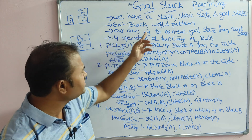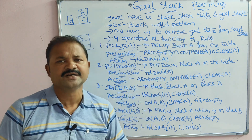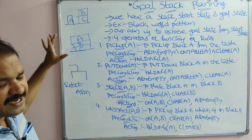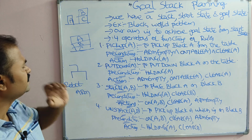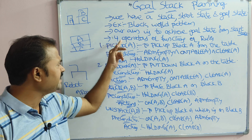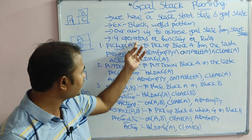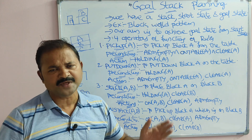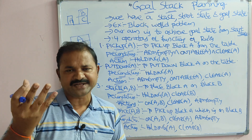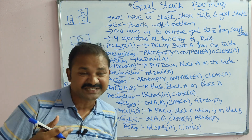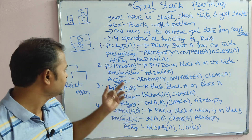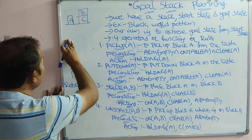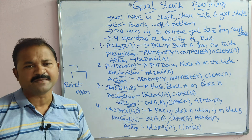Our major aim is to achieve the goal state from the start state. To do that, we mainly use four operators — which can also be called four functions or four rules. These four operators are: pickup(A), putdown(A), stack(A, B), and unstack(A, B).